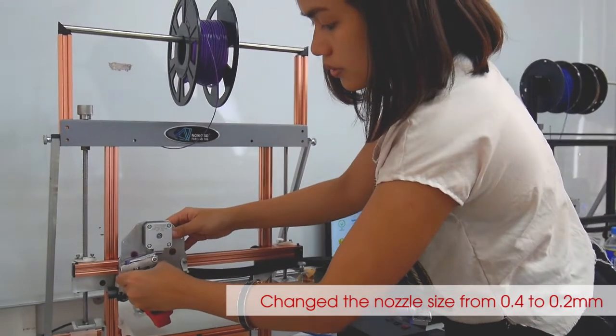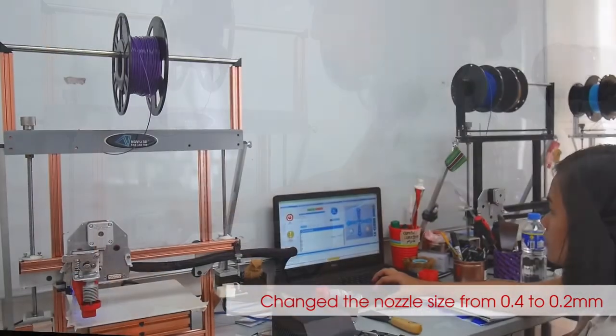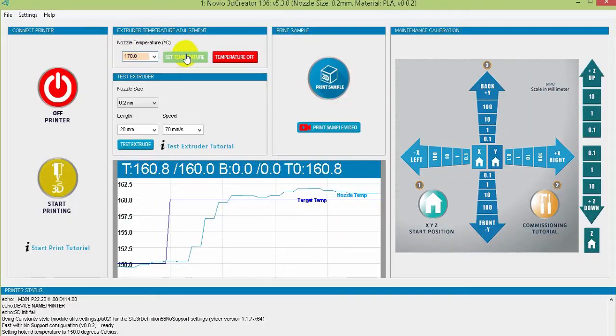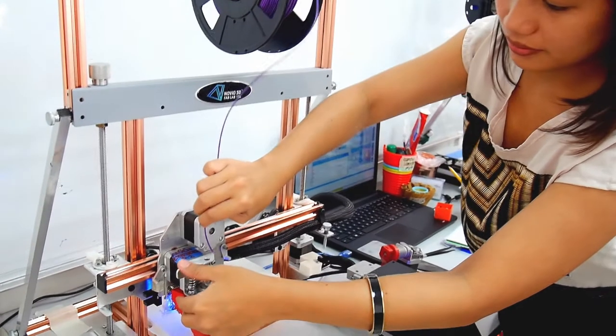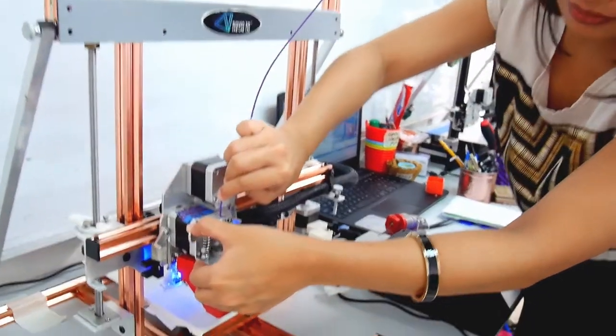In 3D printing, it is important to understand that the nozzle temperature is inversely proportional to the size of the nozzle tip. It means that when the size of the nozzle tip is small, high temperature for the print material is required to melt it.